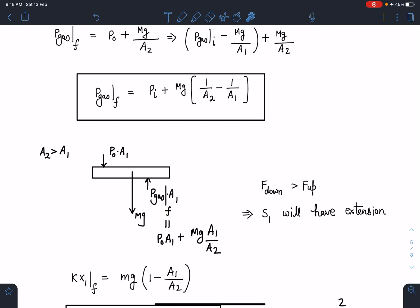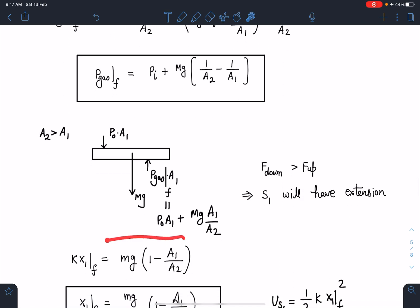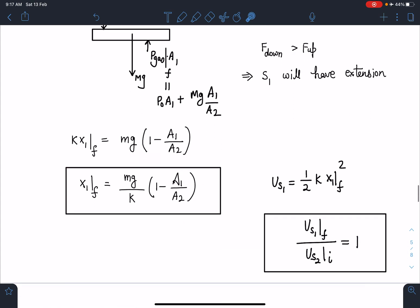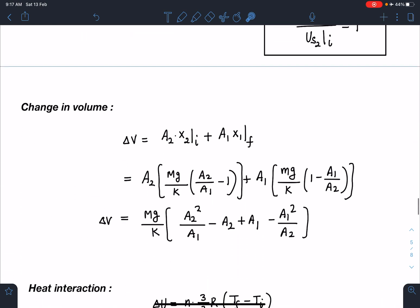In the same situation, if I draw the forces on the first one: atmospheric pressure, mg, and this new pressure into A1. If I check now, I am going to find that the net force in the downward direction is more than upwards, so definitely spring S1 will have extension if A2 is greater than A1. Otherwise it will have compression. Both ways you have to be comfortable. When I do this balancing of forces, I will find out kx_initial and kx1_final, which is going to come as mg(1 minus A1/A2). Magnitude-wise, x2_initial and x1_final both are the same, so from here I can say that US1_final and US2_initial, this ratio is going to be 1 in this case.